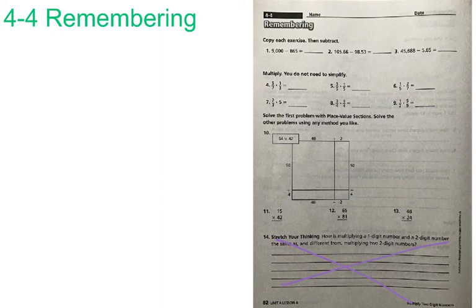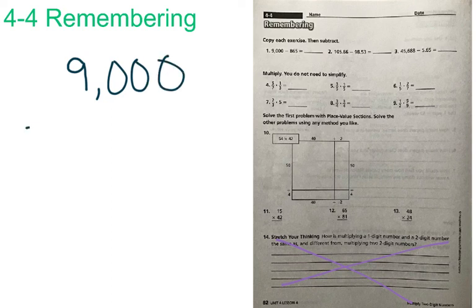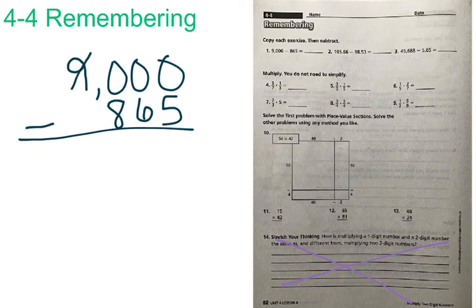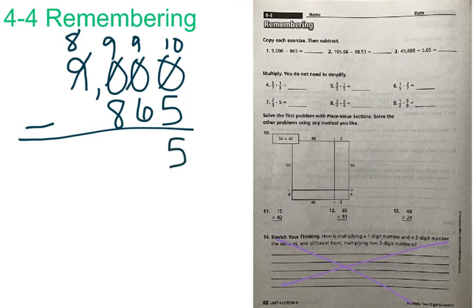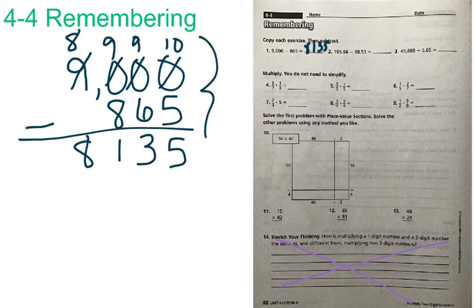The directions say copy each exercise, then subtract. And what they are telling you to do is to line them up. And so number 1 I will go ahead and show you 9000 and you are subtracting from that 865. So we are going to have to borrow from the 9 and it is going to become an 8. This 10 is going to become a 9, this 10 will become a 9 and this one will go ahead and stay a 10. 10 minus 5 is equal to 5, 9 minus 6 is equal to 3, 9 minus 8 is equal to 1, and 8 minus nothing is equal to 8. So your answer is 8,135 and you need to write that out just like I wrote it here.